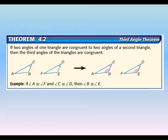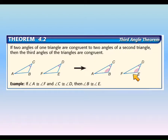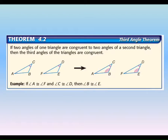The next theorem on your postulate sheet, 4.2, is called the Third Angle Theorem — something we probably already know. It says if you have two angles of one triangle that are congruent to two angles of a second triangle, their third angles also have to be congruent. So if angle A and F are congruent with one tick mark, and angle C and D are congruent with two tick marks, then angle B and E must also be congruent — marked with three tick marks. This makes sense: if two pairs are the same, the third pair is forced to be the same because all angles must add to 180.